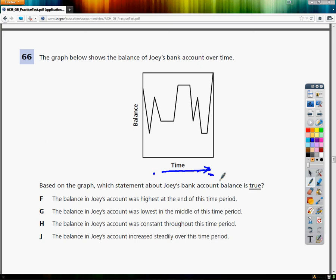The earlier periods are here and the later ones are here. The balance, which would be how much money he has in his account, I'm assuming goes up as well unless it says otherwise.